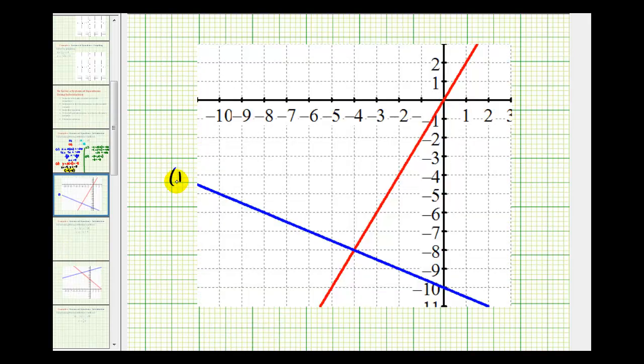Here's the graph of equation one. Here's the graph of equation two. And notice that our point of intersection here does have the coordinates of negative four, negative eight, which again is the solution to our system of equations.